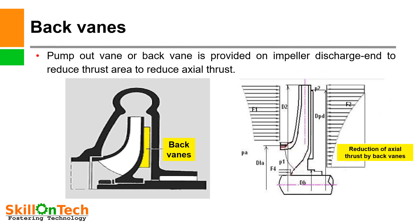Back vanes (pump-out vanes): A back vane or pump-out vane is provided on the impeller discharge end to reduce the thrust area and thereby reduce axial thrust. You can see in this picture that a pump-out vane is provided on the impeller discharge side. By providing a back vane or pump-out vane, the axial thrust is reduced by the area shown in the picture. This measure is also taken in centrifugal pumps and compressors to reduce axial thrust.